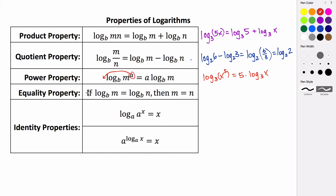The equality property says if you have two logs with the same base that are equal, then their arguments are equal. This is similar to the exponential property, where if you have two exponential expressions that are equal with the same base, then their exponents are equal. This is the same idea.